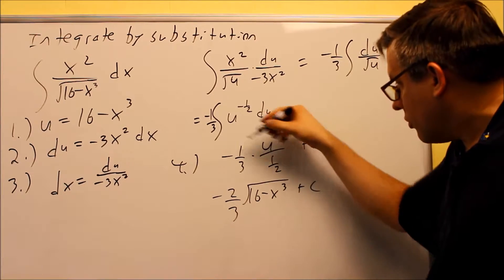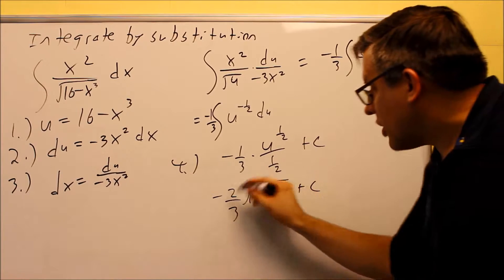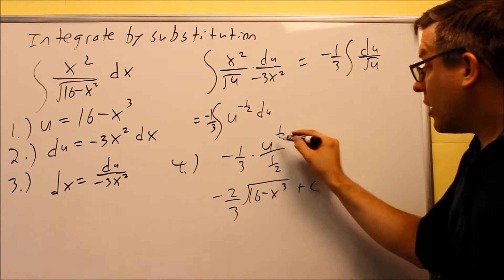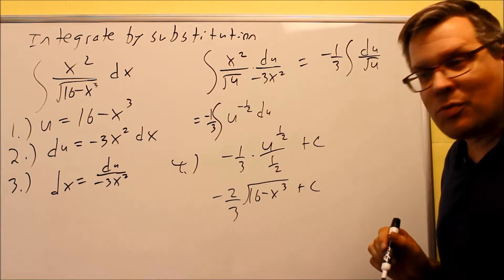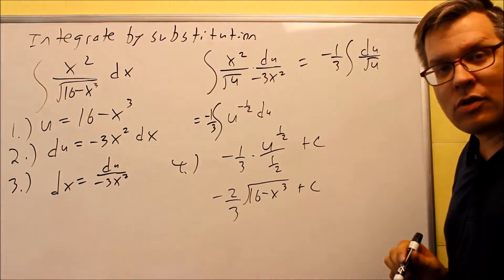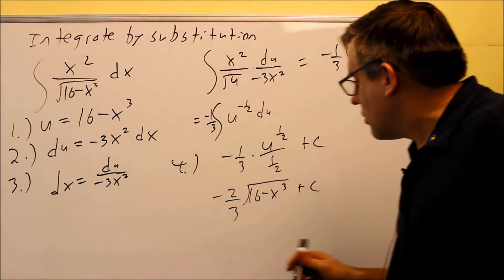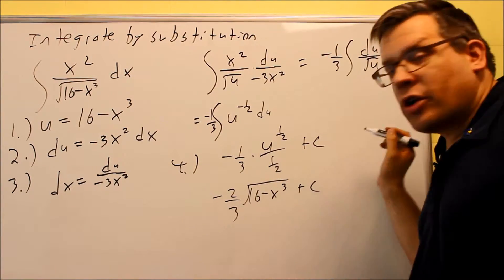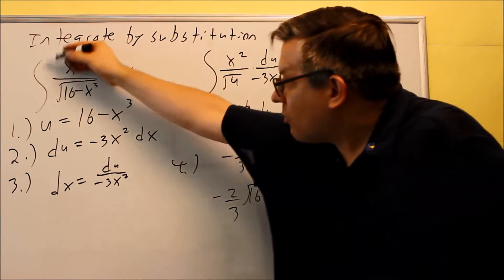So I flip the two, two times negative one-third is negative two-thirds there. I get u to the one-half, but the u, I put that expression back in, because your answer has to have x's in it, because that's how it originally was given, and our problem has x's. And then this would be your final answer, you're putting a plus c in it, because you don't have any numbers here on the integral.